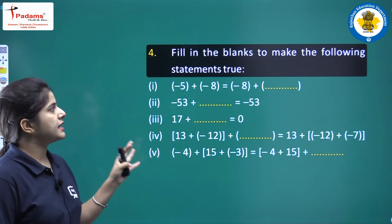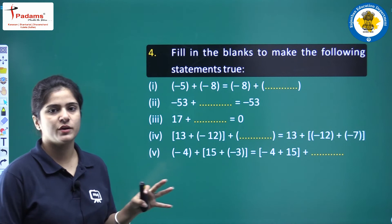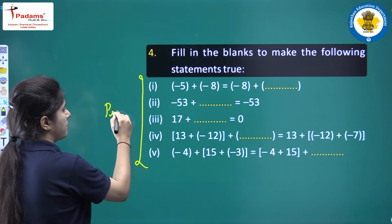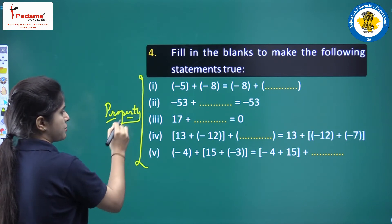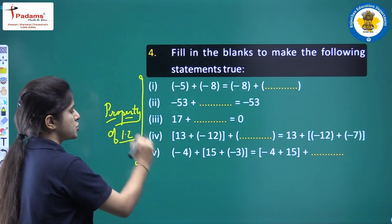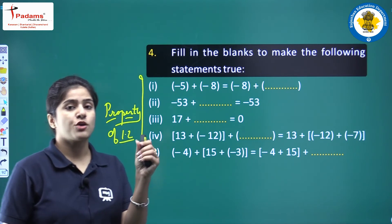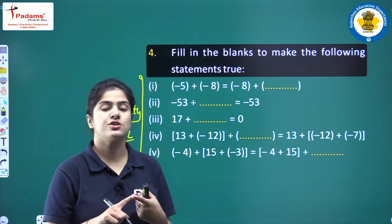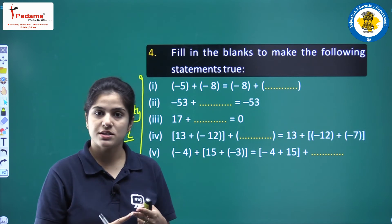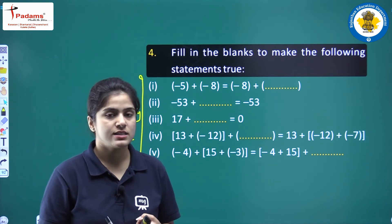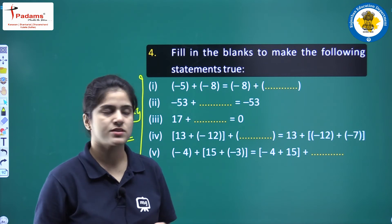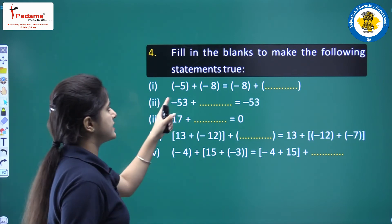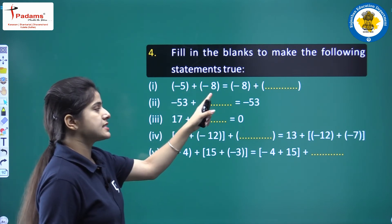Next question: fill in the blanks to make the following statements true. This question is concerned with the properties we discussed in the last lecture — properties of Exercise 1.2, that is properties of addition and subtraction of integers: closure, commutative, associative, additive identity, and additive inverse.